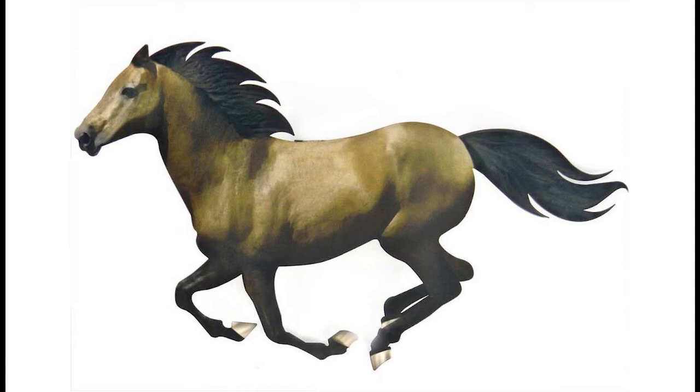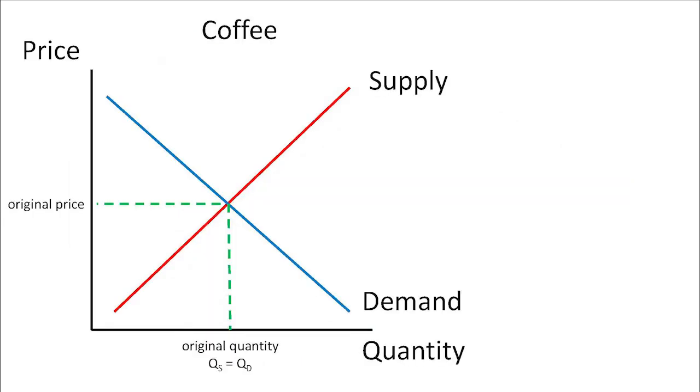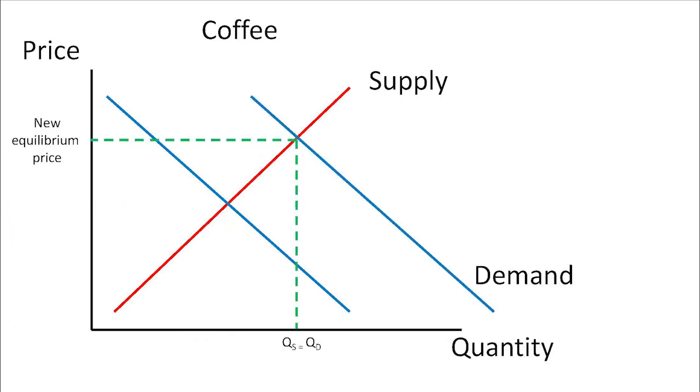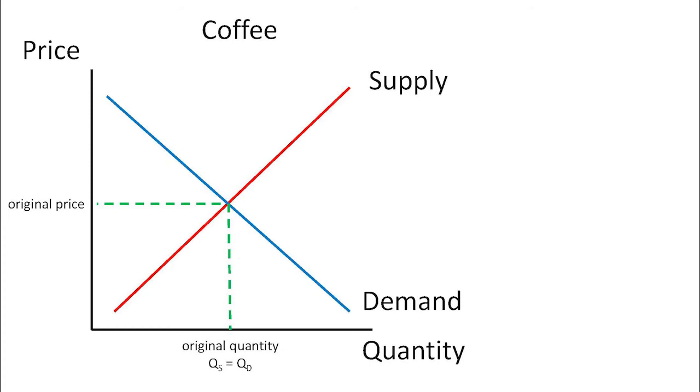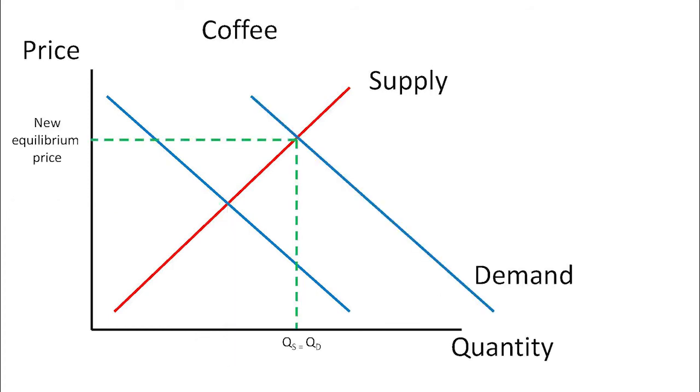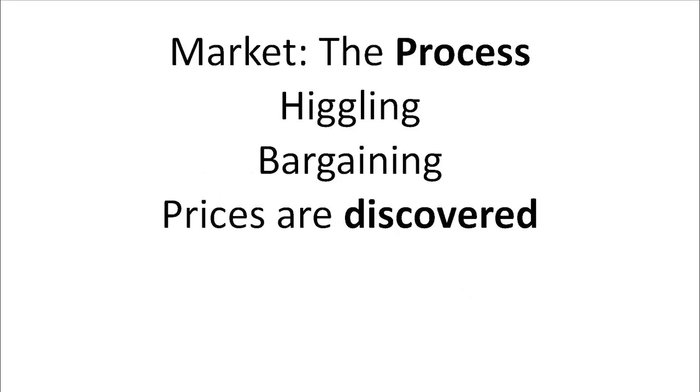The same is true with what we often do in economics. We show a photograph of a horse running here, and a photograph of a horse running here, and we move from one equilibrium to another equilibrium in one fell swoop. But that's not what's actually happening. We don't move from one price and quantity pair to another automatically. The market is the process. The higgling and bargaining that happens in the marketplace amongst buyers and sellers. The market is the process whereby prices are discovered. The new price comes to be discovered as buyers and sellers interact in the marketplace.